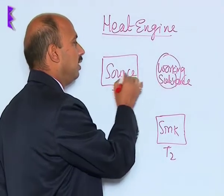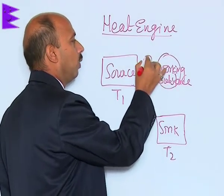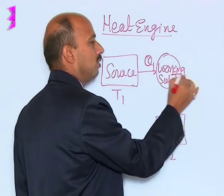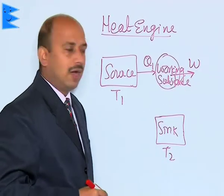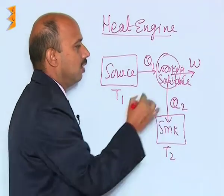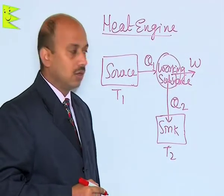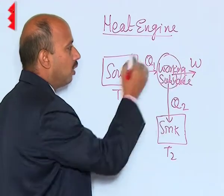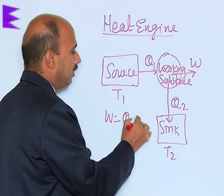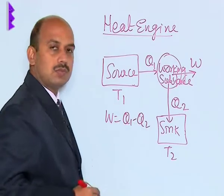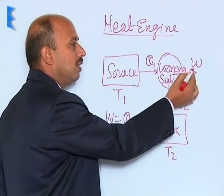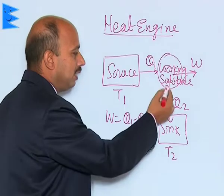The working substance takes heat from the source, that is Q1. Some work is done by this working substance — that work is W. And the remaining heat is given to the sink. The heat given to the sink is Q2. So in this case, work done can be written as W = Q1 minus Q2.